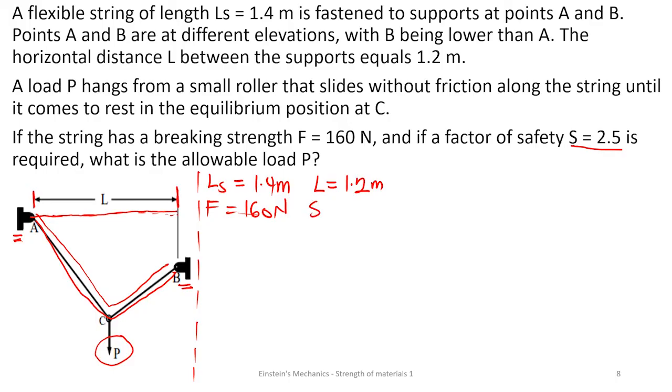We have a factor of safety as 2.5. Factor of safety just means that if I want to design something which can carry 160, I should put in a parameter such that its strength should be more than that 160, so that in case any unforeseen situation happens, it can still withstand it.